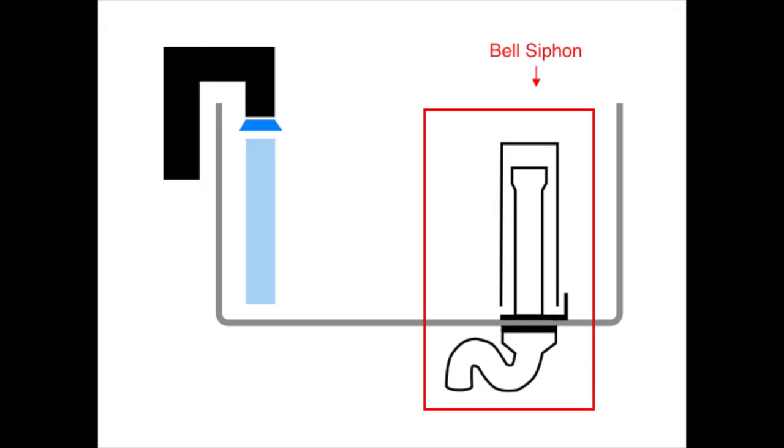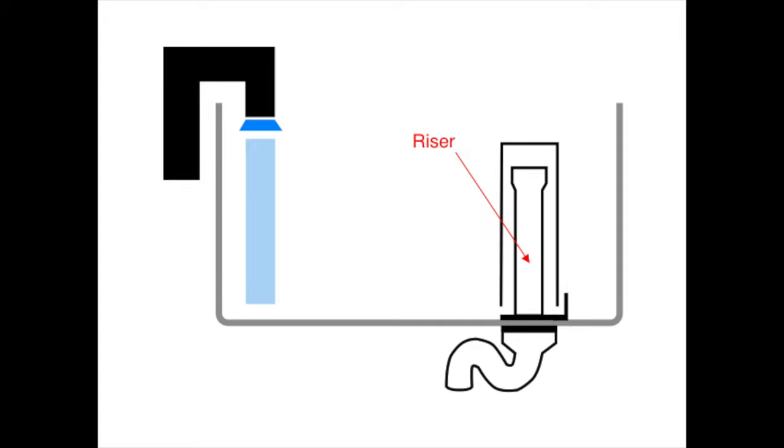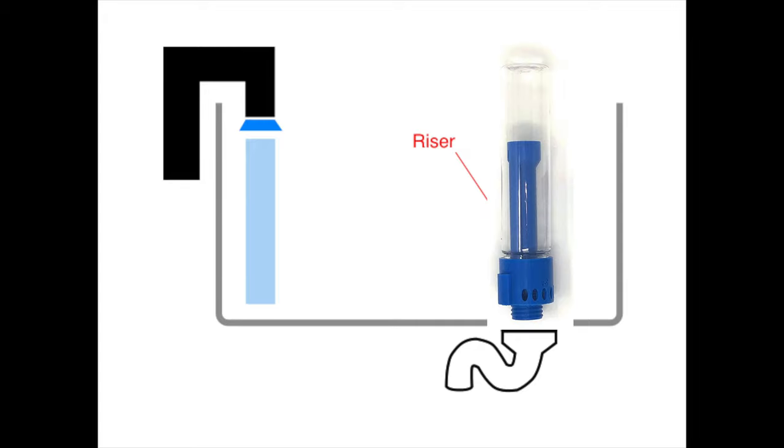This is the bell siphon. This is a bell siphon S-trap. It helps create back pressure so the siphon starts more reliably. This is the bell. This is a riser which is also known as a standpipe.